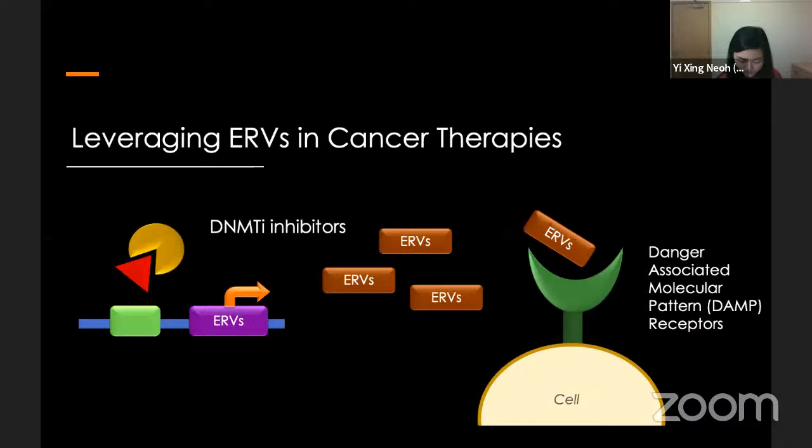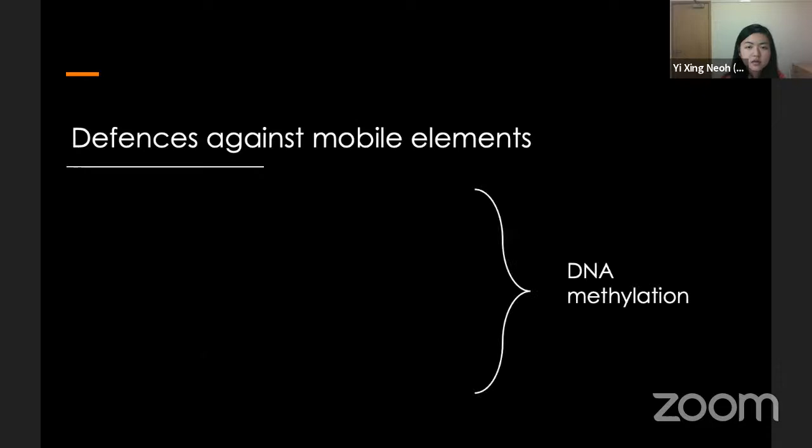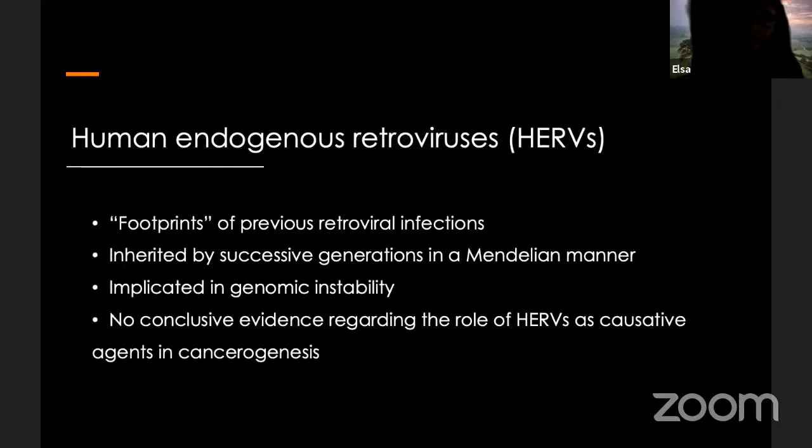HIV is specifically in humans, but because viruses can infect any organism, you have endogenous retroviruses within other genomes as well — like plant genomes, for example.